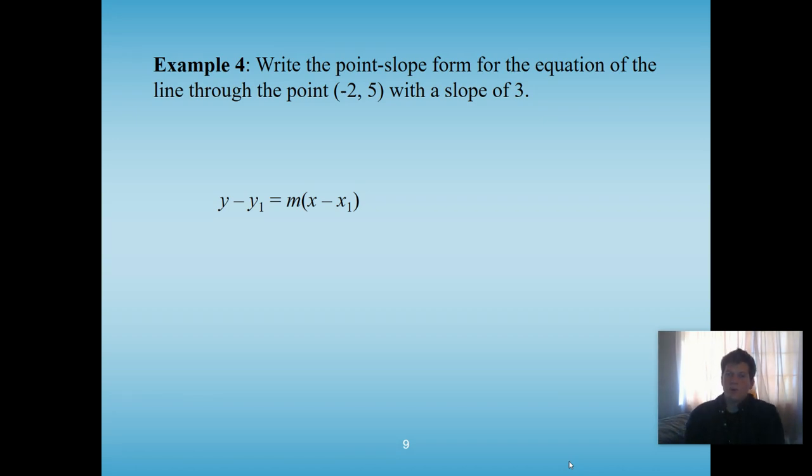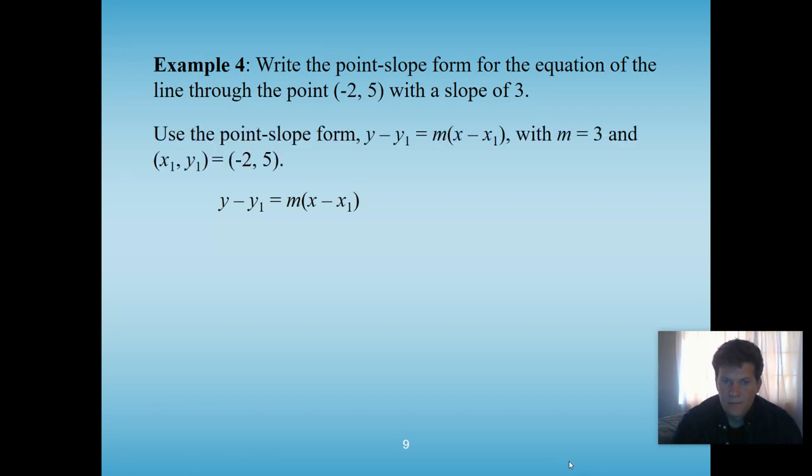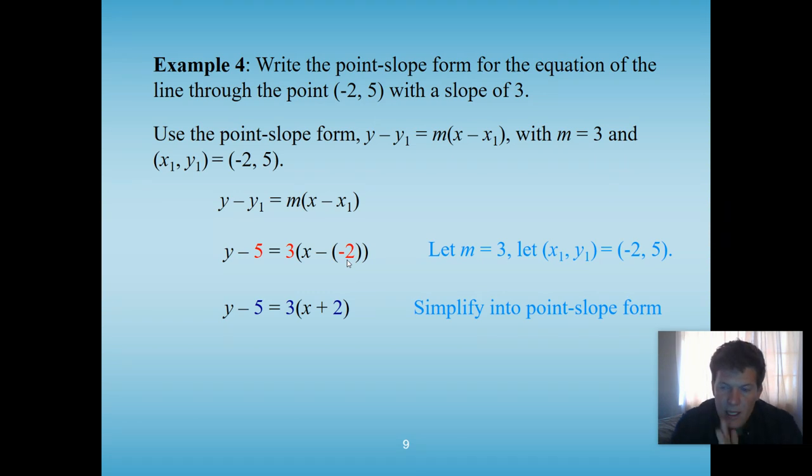Here's another one. This time, it says write point-slope form for the equation of the line through the point (-2, 5) with a slope of 3. So giving us the point, giving us the slope, let's come up with the equation. Now, on this one, we know the slope is 3. So whenever I see slope, which is m, I plug in that 3. Then I plug in my y value and my x value. So I have my 5 for the y, negative 2 for the x. And this one I like a lot because it really gives you that visual. Remember, it's minus there. So minus a positive is just going to stay minus. But minus a negative switches and it becomes positive. So our final answer here is y - 5 = 3(x + 2).